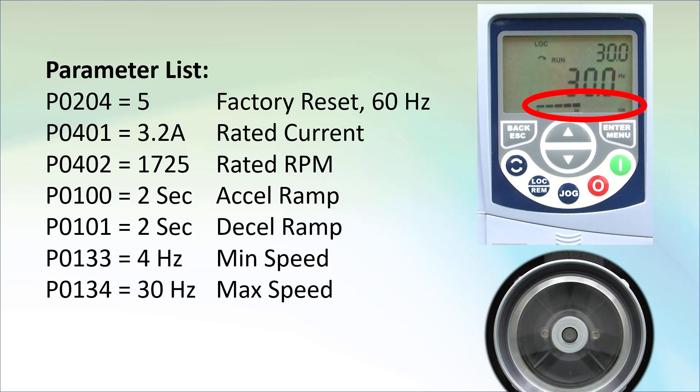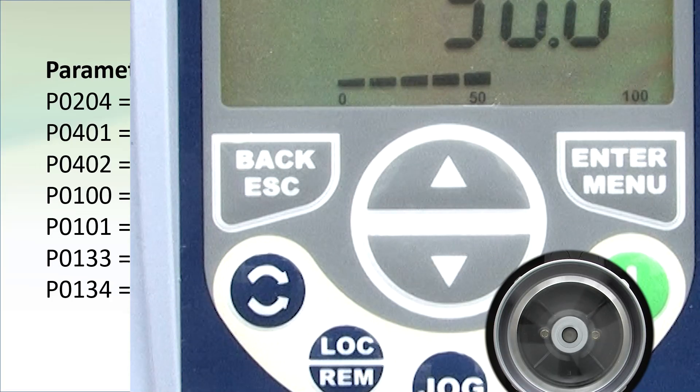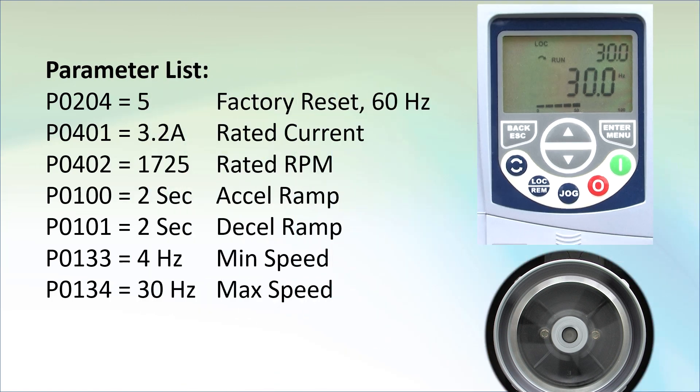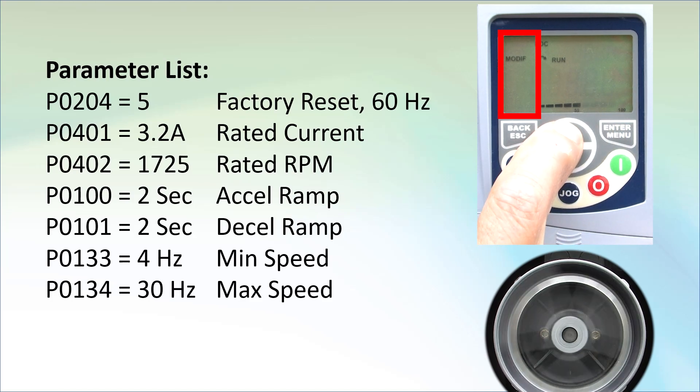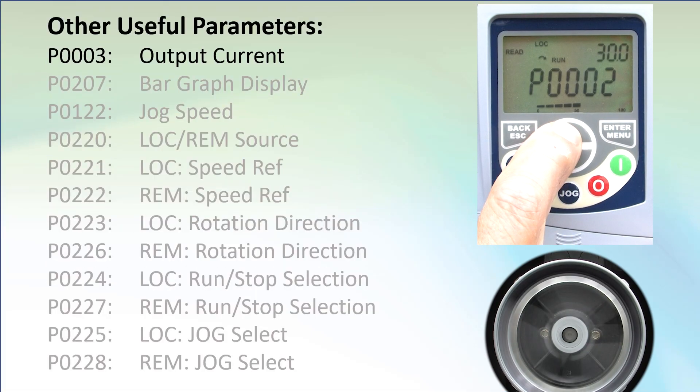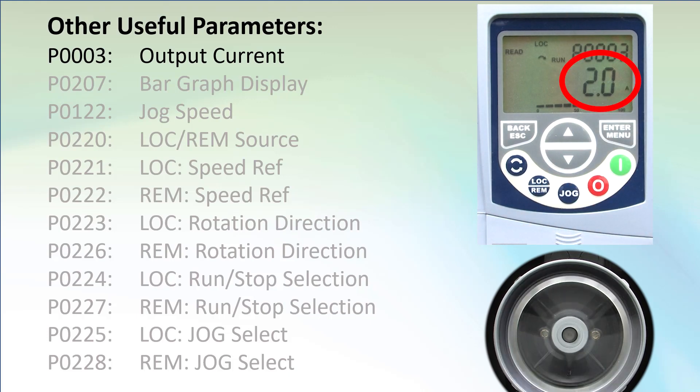The bar graph down here is showing us the percent of rated current. Looks like around 60% of rated current. Our rated current is 3.2 amps and 60% of that would be around 2 amps. If we drop into the parameter menus and arrow to the read menu, enter into that and scroll to parameter 3, we can see the actual current. Yep, about what we expected. By the way, parameter 207 controls what the bar graph displays.